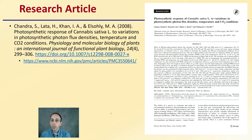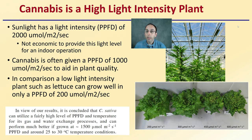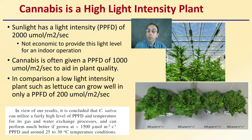Here's a research article looking at the photosynthetic response with variations in photosynthetic photon flux densities, abbreviated PPFD. When we're looking at cannabis specifically, cannabis is a high-light-intensity plant. Sunlight has a light intensity measured in PPFD of 2,000 micromoles per meter squared per second. However, it is not economical to provide this light level for an indoor operation. Cannabis is often given around 1,000 micromoles per meter squared per second to aid in plant quality.